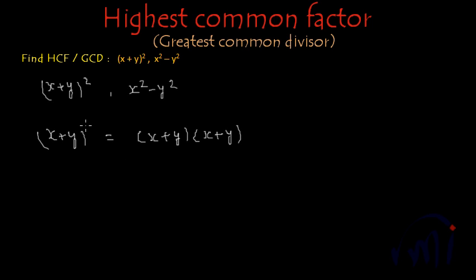So the factors of x plus y whole square are x plus y multiplied by x plus y itself and then we have to find the factors of the second expression which is x square minus y square. And what do we know? We know a square minus b square is a minus b multiplied by a plus b.